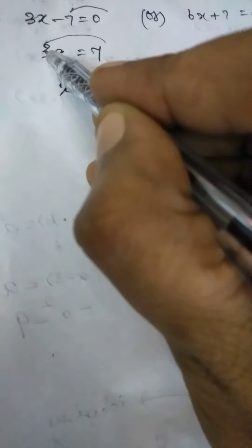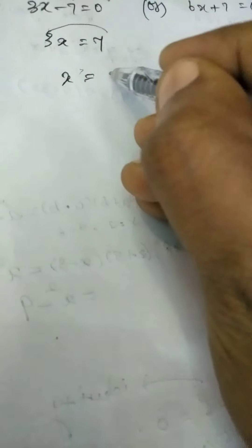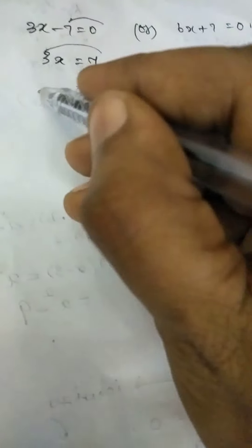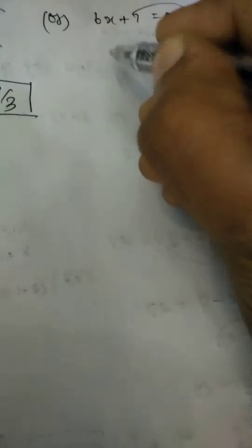So these linear factor we want to solve and get the value of x. So first you transpose this minus 7 this side. So minus 7 will change into plus 7 and next you transpose 3 next side and x it is in the form of multiplication. If you are transposing next side it will become division.